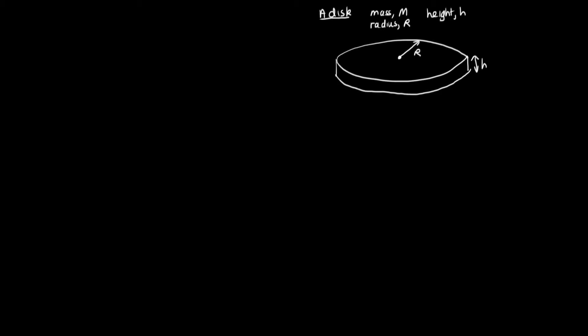We're going to start by considering a disc. The disc has a total mass M, a radius R, and a height H. We'll be calculating the moment of inertia I, which we've seen before is equal to the integral of r² dm.